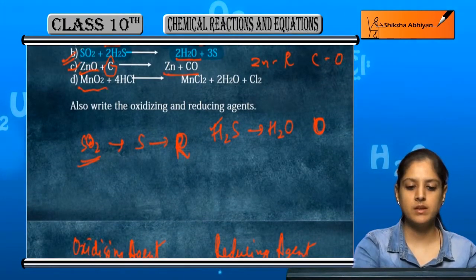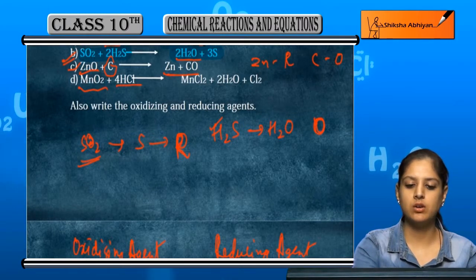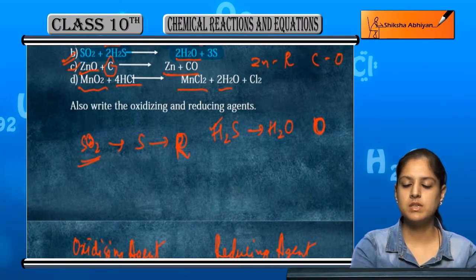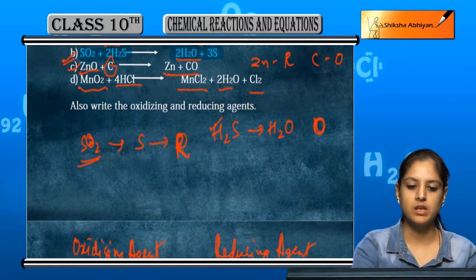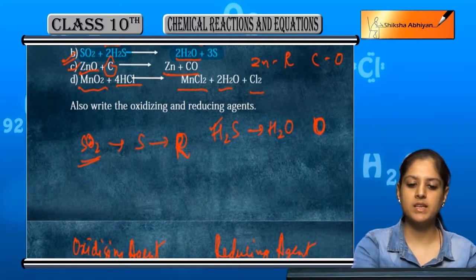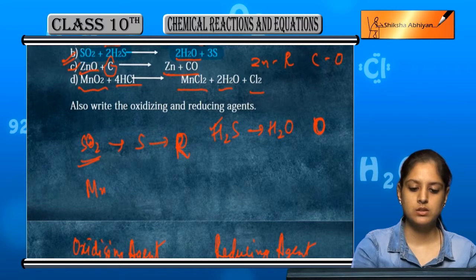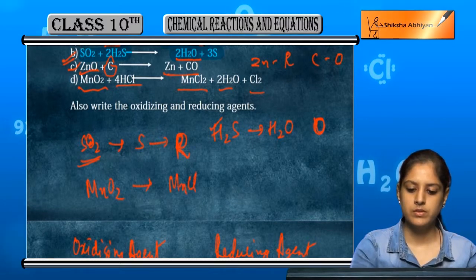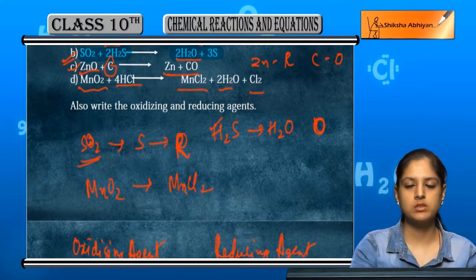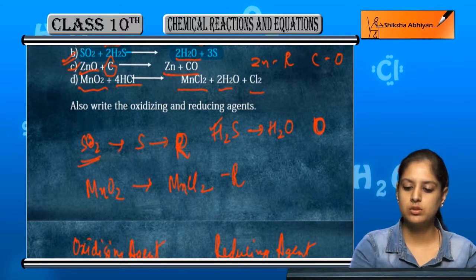Next is manganese oxide and HCl giving MnCl₂, water, and Cl₂. Oxygen was removed from MnO₂, so this is a reduction. MnO₂ has been reduced.